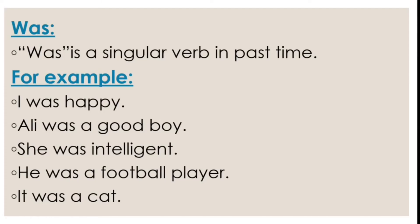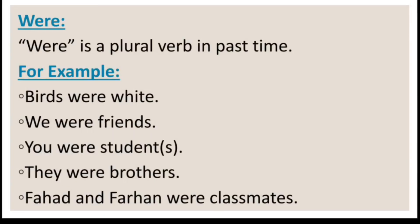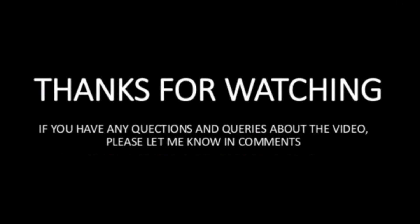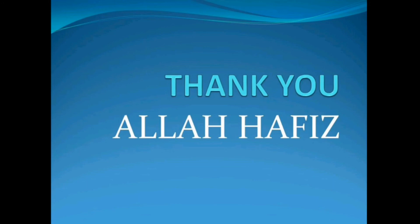Now, where to use 'was' and where to use 'were': 'was' is a singular verb in past time. For example: 'I was happy' — mein khush thi. 'Ali was a good boy.' 'I' is also singular — here there is no condition like 'am', so 'I' is treated as a singular subject with 'was'. Thanks for watching. If you have any questions or queries about the video, please let me know in the comments. I hope you liked the video. If you like my video, subscribe and share. Thank you so much. Allah hafiz.